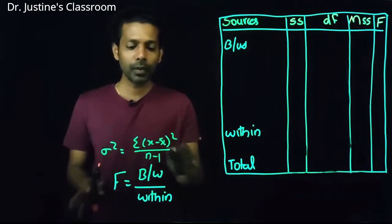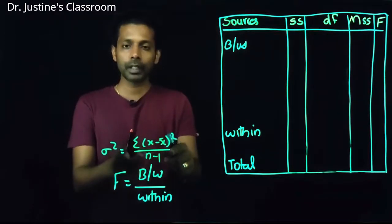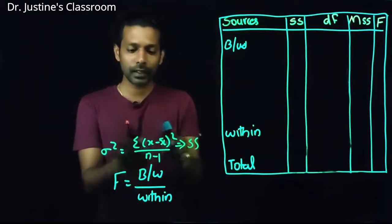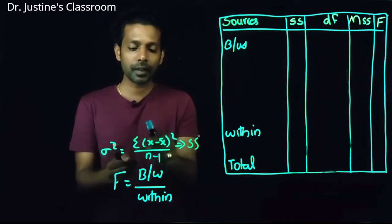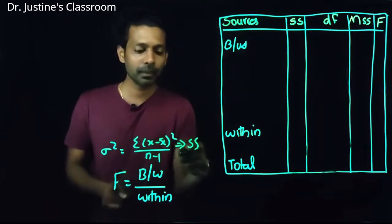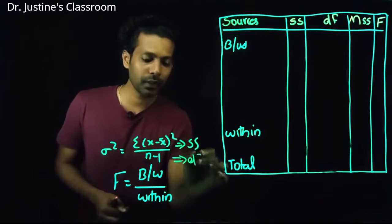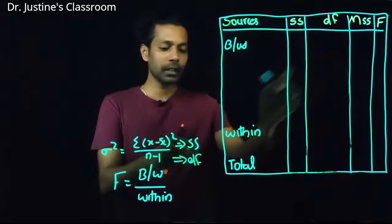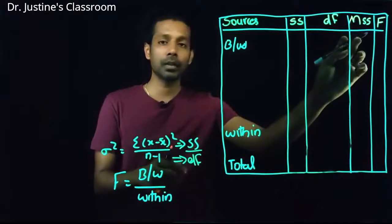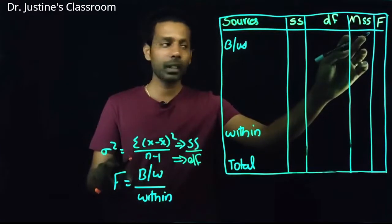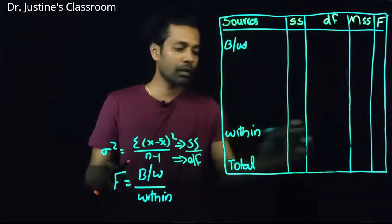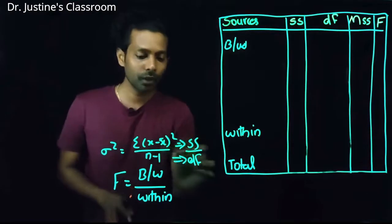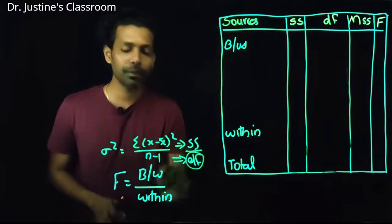For both between-condition and within-condition, we do this variance calculation. The numerator part — sum of (x minus x-bar) squared — is called sum of squares (SS). The denominator, n minus 1, is the degree of freedom. We calculate SS, divide by degree of freedom, and get mean sum of squares, which is nothing but variance. Between-variance divided by within-variance gives us the F-value. Today's class focuses on how to calculate this degree of freedom.